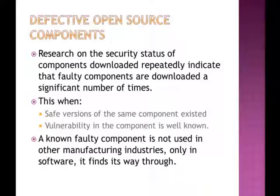We keep focusing on defective open source components because the good news of using open source components should be weighed against the defective nature of some of those components, which may not be visible right in the beginning, but as time progresses, new vulnerabilities are discovered in open source components. Research on the security status of repeatedly downloaded components indicates that defective components are downloaded a significant number of times, especially when safe versions of the same components exist and the vulnerabilities have been published and are supposed to be known to everyone using them.